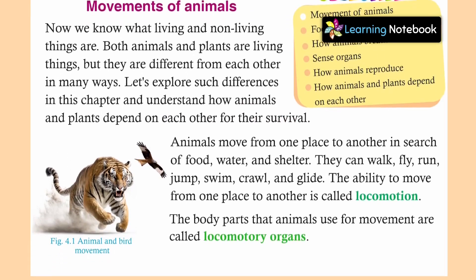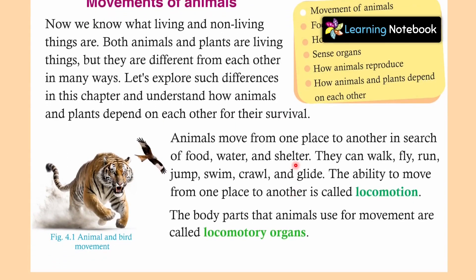Animals move from one place to another in search of food, water and shelter. जो animals होते हैं वो एक जगह से दूसरी जगह move करते हैं, अपने खाने के लिए, पानी के लिए और shelter के लिए. They can walk, fly, run, jump, swim, crawl and glide. The ability to move from one place to another is called locomotion. Animals में ये ability — एक जगह से दूसरी जगह move करने की — उसे हम कहते हैं locomotion.